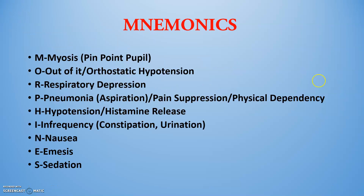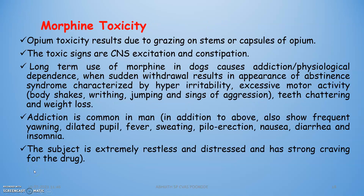A mnemonic for morphine's properties spells M-O-R-P-H-I-N-E-S: Miosis (pinpoint pupil), Orthostatic hypotension, Respiratory depression, Pneumonia (due to aspiration), Hypotension, Infrequency (constipation, urination changes), Nausea, Emesis, Sedation. Morphine toxicity can lead to CNS excitation, constipation, and sometimes liver and kidney failure.